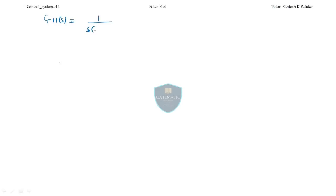Hi friends, welcome back. Till now we have seen two conditions: what will happen when we add finite poles, and what will happen when we add poles at origin. Let me start the session. The last transfer function G(s) we saw — we drew the polar plot for it, starting from omega equal to 0 and ending at omega equal to infinity. Now, what will happen when you add two poles at origin?